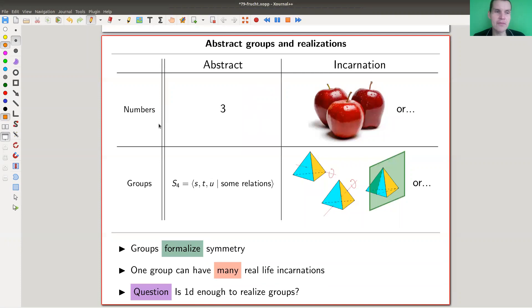And the idea of the group is roughly the following. So a number is actually an abstract incarnation, an abstract concept of a real-world incarnation. So the number three has a real-world incarnation as three apples. And the group is some abstract concept, S4 here, symmetric group in 4 elements of the letters 1, 2, 3, 4. It's an abstract realization of an explicit real-world incarnation. In this case, it's a symmetry group of the tetrahedron.